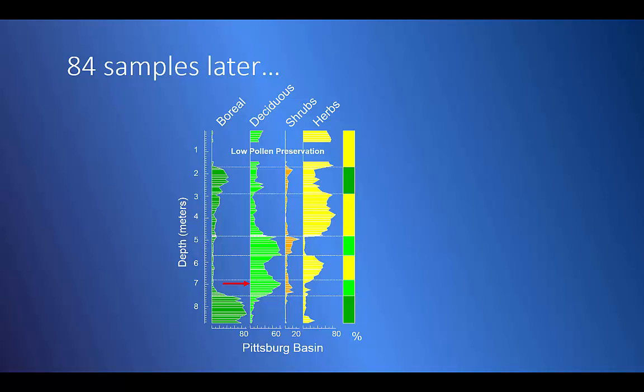For example, the boreal forest types include spruce, pine, birch, fir, and aspen. Rather than look at the individual pollen types, the reader is supposed to work out the collective vegetation changes over time. To make that easier, I broke the diagram into zones that have similar assemblages.